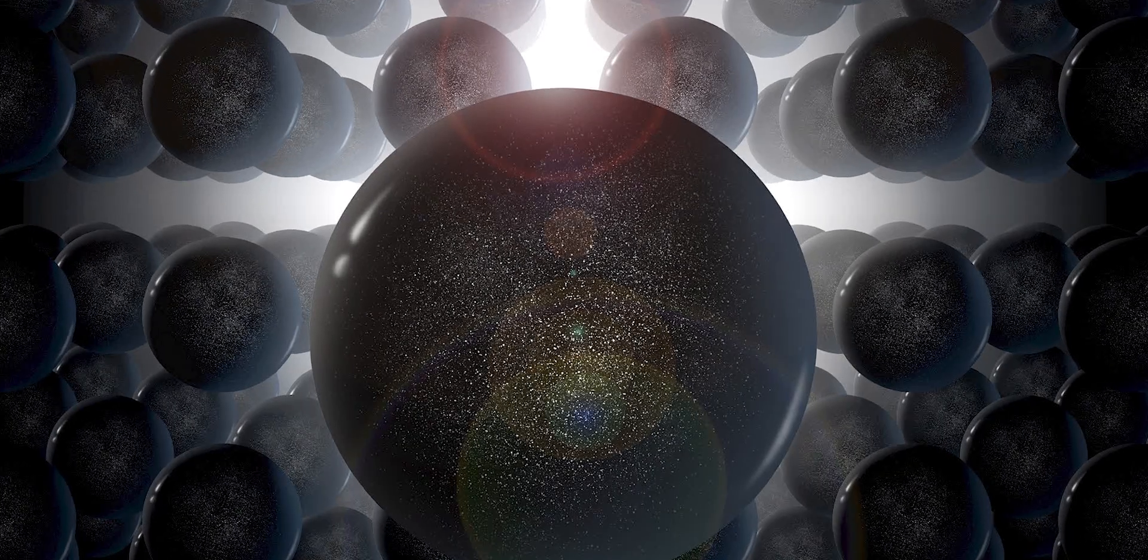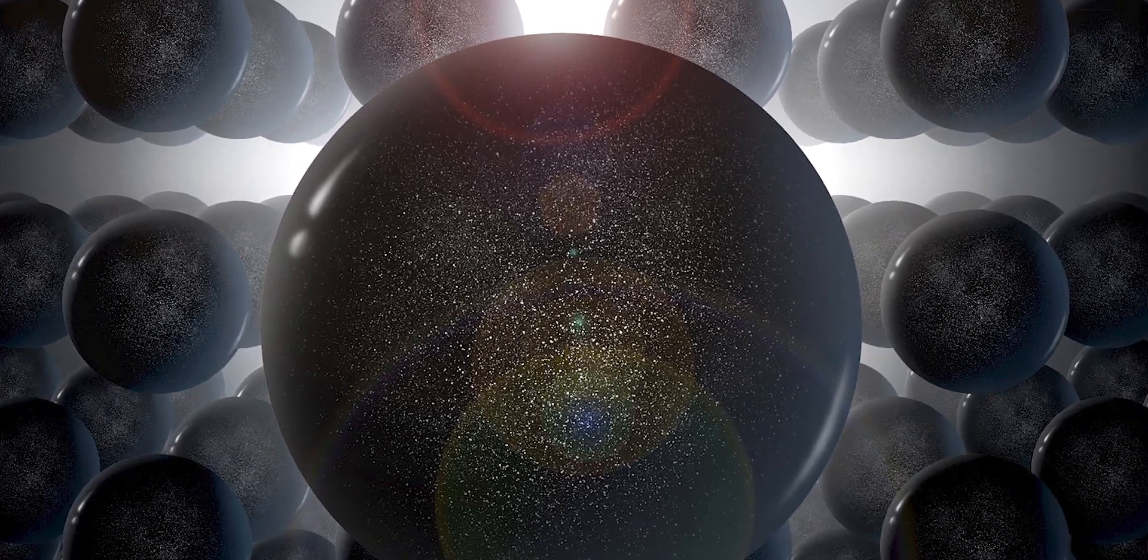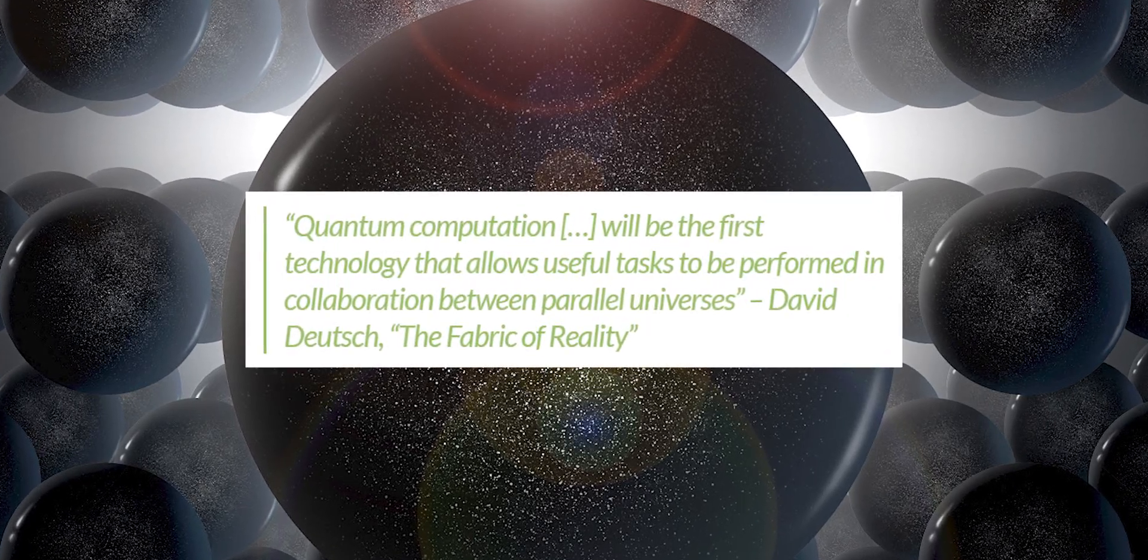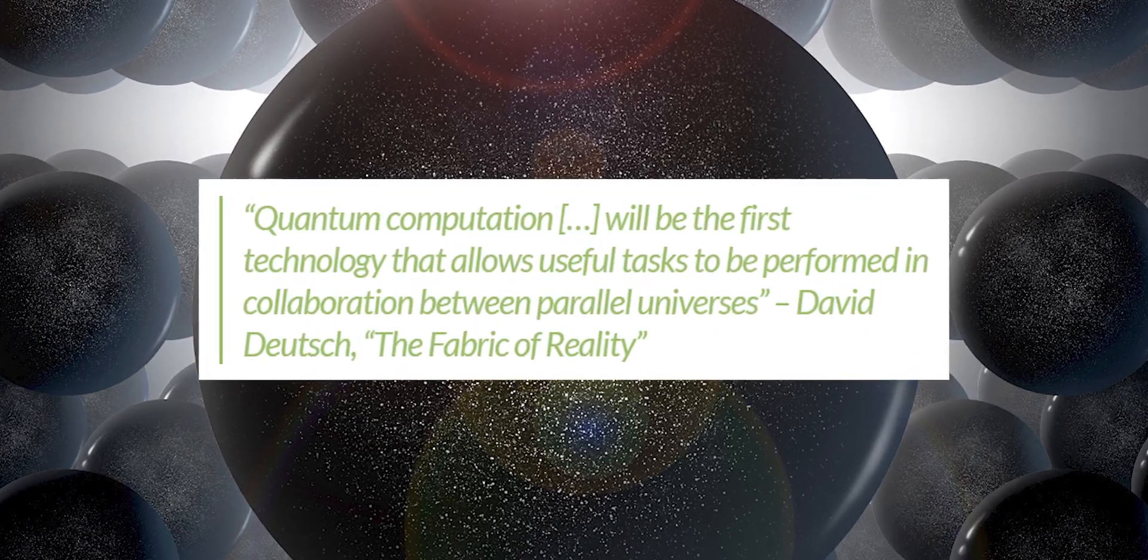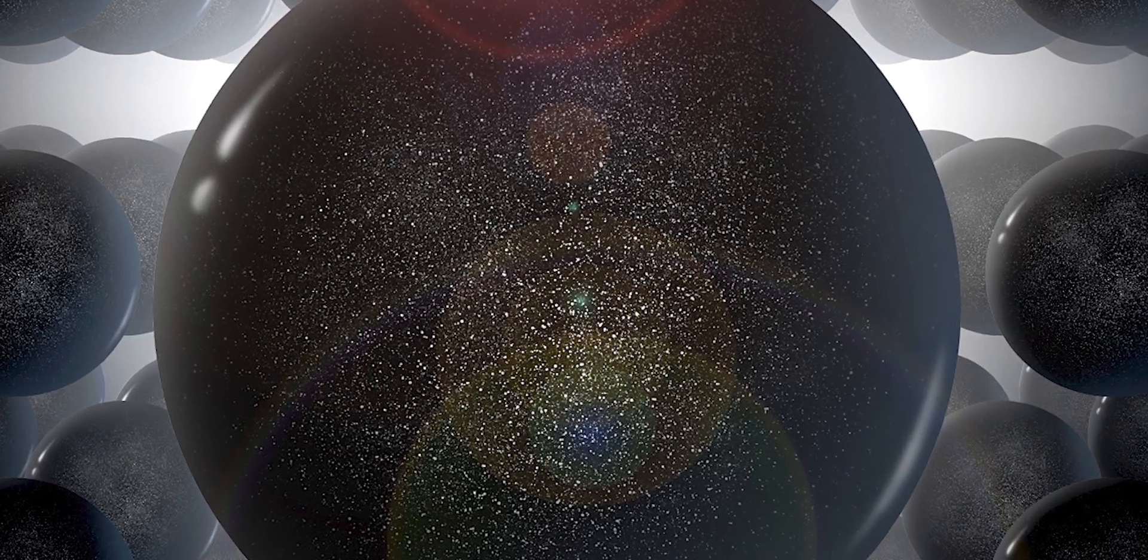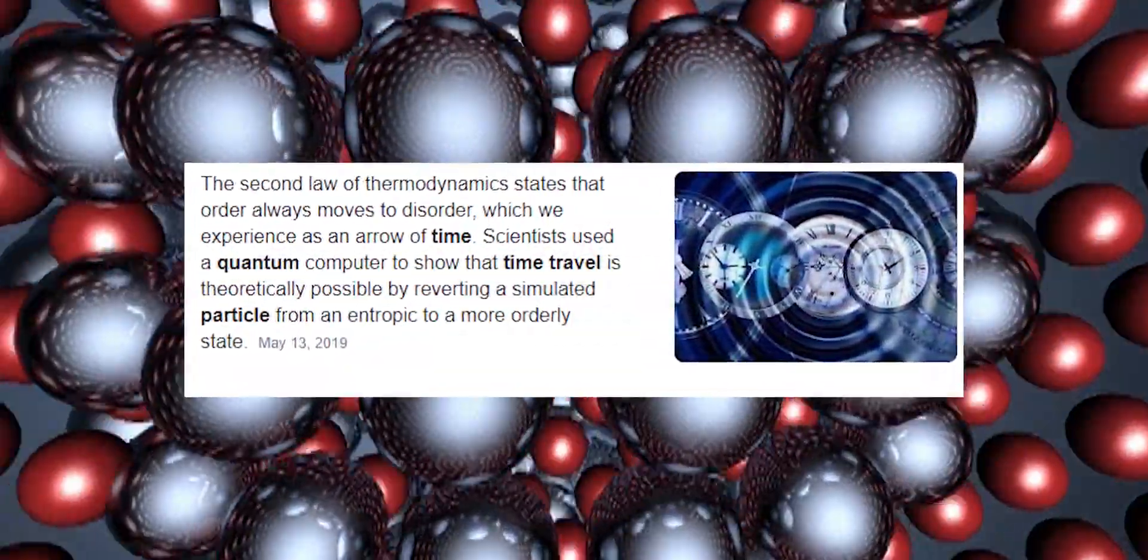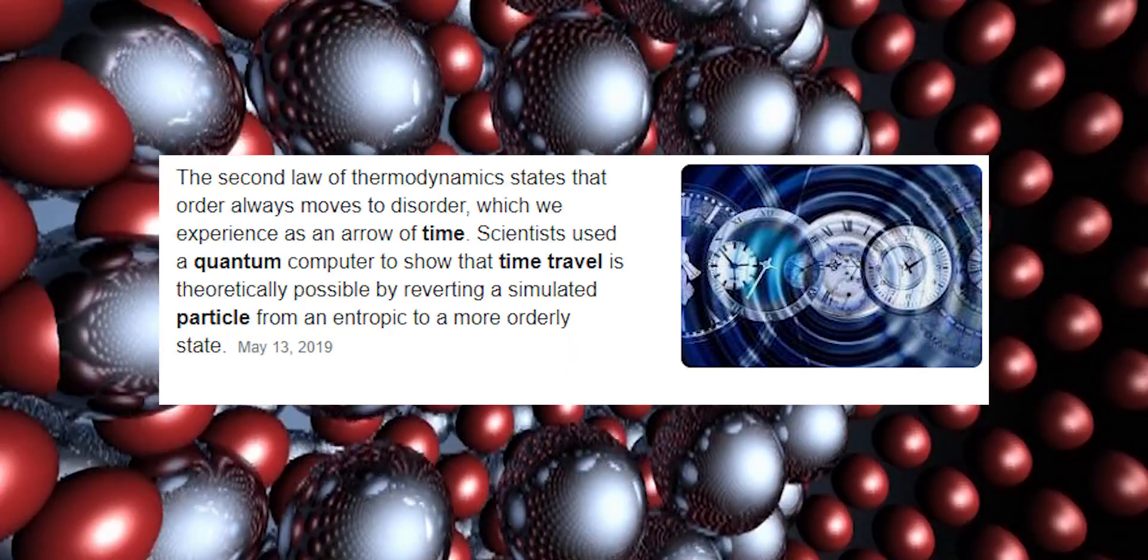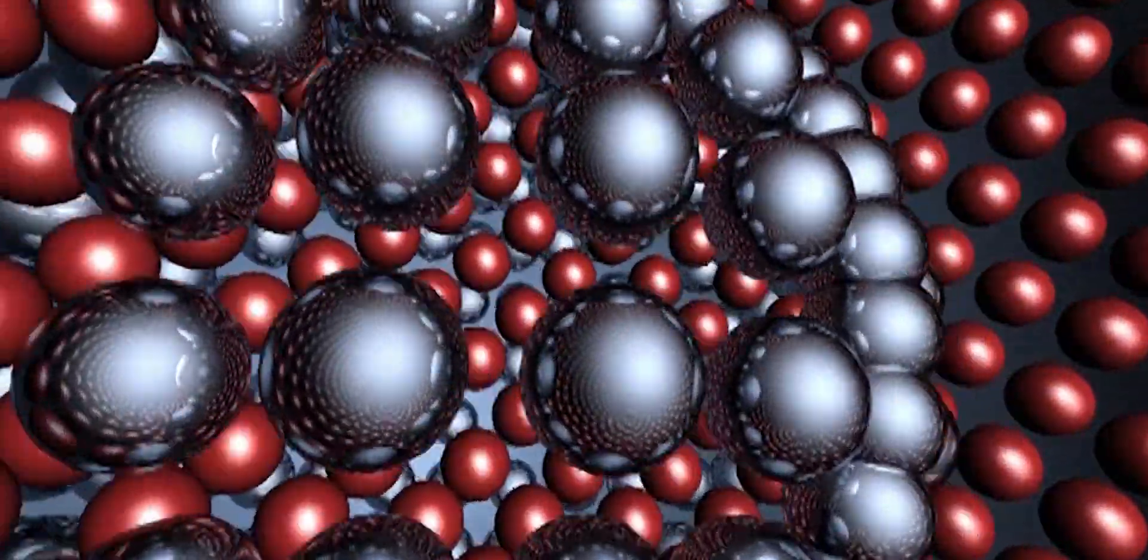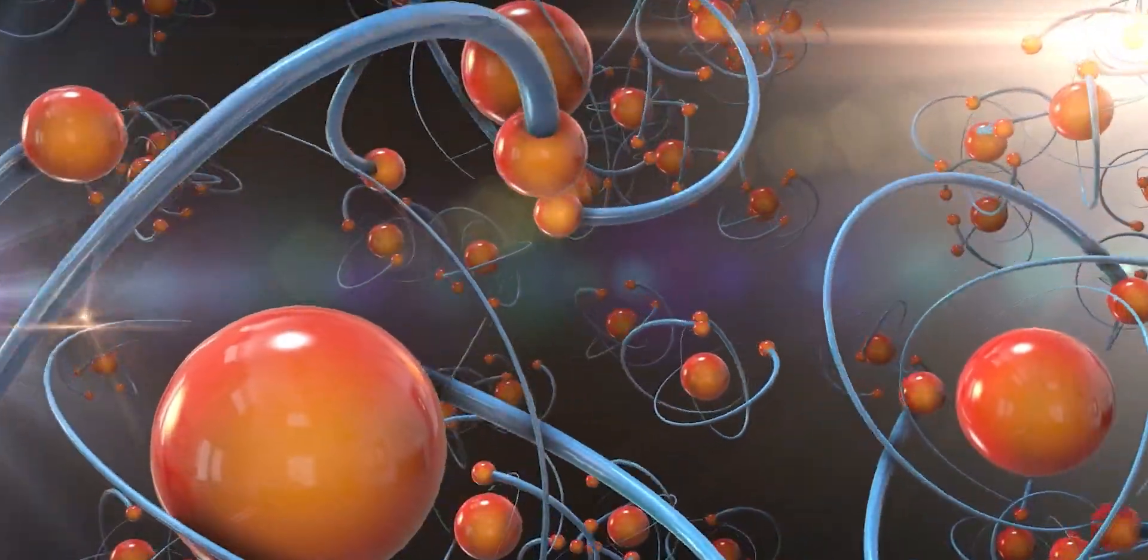One possible explanation of why quantum computers work involves parallel universes. It has been theorized that qubits are able to exist in two states simultaneously because we are observing them in multiple universes simultaneously. At the quantum level, science fiction appears to become reality. Particles can travel backwards or forwards in time and can also teleport between two positions. This is a well-known phenomenon known as quantum tunneling.